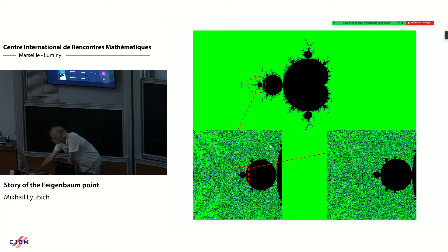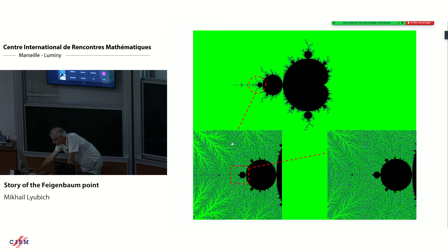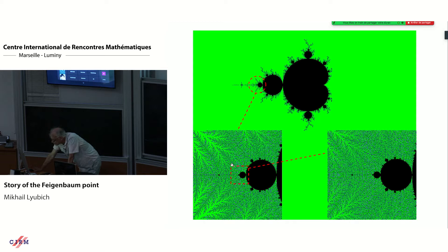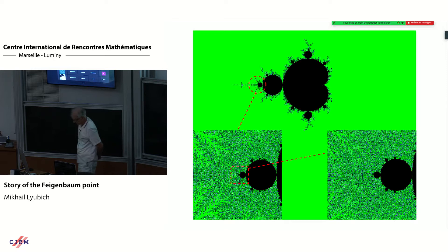The next slide reproduces the same picture, confirming this self-similarity. You see two blow-ups absolutely impossible to distinguish - self-similarity is absolutely obvious. What is also interesting here is the so-called hairiness phenomenon observed by Jack Milnor: if you blow up the whole Mandelbrot set, then there is no self-similarity, but it becomes more and more dense near this parameter value. The Mandelbrot set occupies a bigger and bigger part of the whole plane, though there are fjords that allow us to penetrate towards the Feigenbaum point.